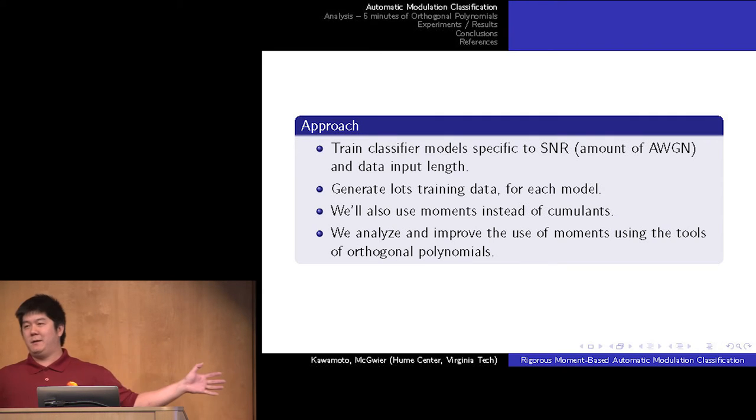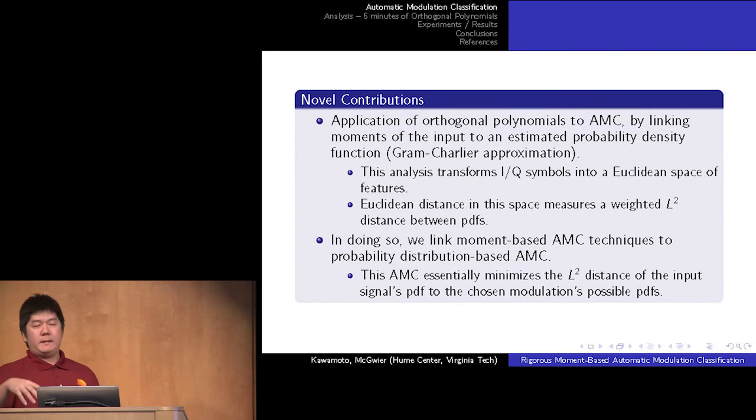Rather than having static decision regions, I propose we should incorporate these errors into our classifier models. Basically, the idea is we're going to train a classifier where each model is tuned to a specific SNR and specific data input length. This gives us an idea of the space of empirical moments or cumulants around what statistically it should be. We're capturing these two problems in training data. For a bunch of reasons, we're going to shift away from cumulants and move to moments. Now, if we stopped right there, this would be a machine learning paper. But this is rigorous moment-based automatic modulation classification, so we're going to start diving into a little bit of math.